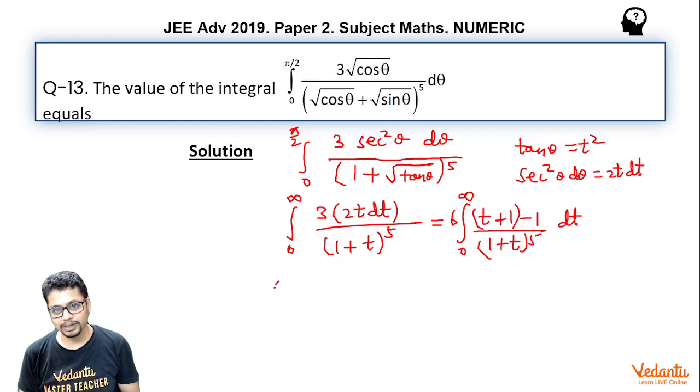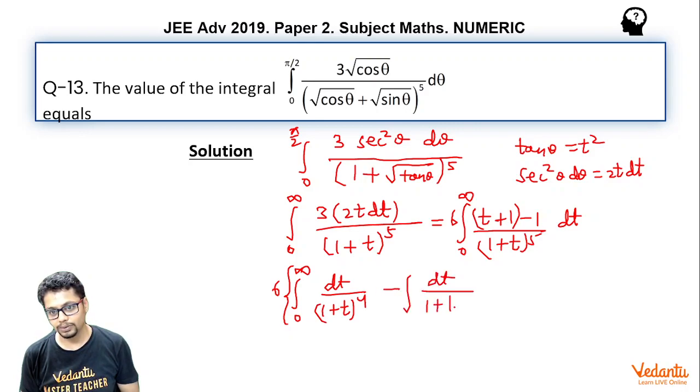So, it essentially becomes 6 times integral 0 to infinity t plus 1 divided by 1 plus t whole to the power 5 is essentially 1 plus t whole to the power 4 minus integral 1 plus t whole to the power 5. So, essentially,